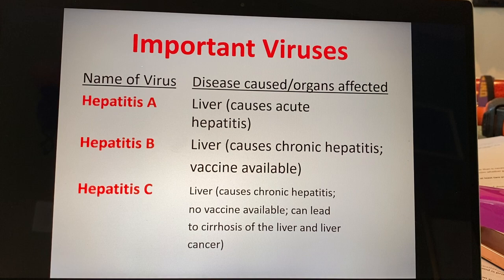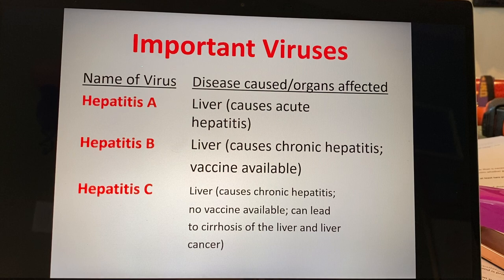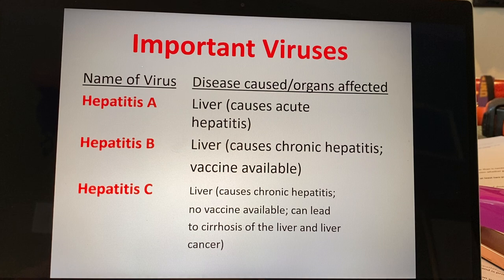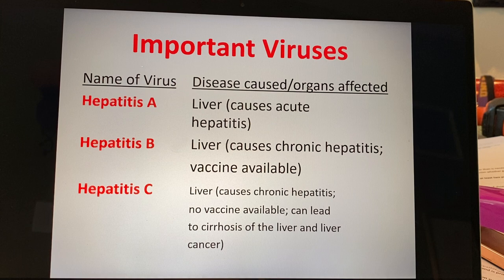Let's talk about some important viruses. Whenever you see the prefix HEPA, that means it's a virus that infects the liver. The common ones we see in the United States are Hep A, Hep B, and Hep C. Hepatitis A is a little different — it actually travels in the intestinal tract and that's where it has its effects. Hepatitis A causes what we call acute hepatitis, meaning if you get enough of that virus and you're immunocompromised enough, you're going to get sick right away.